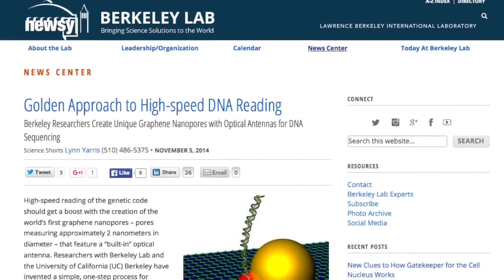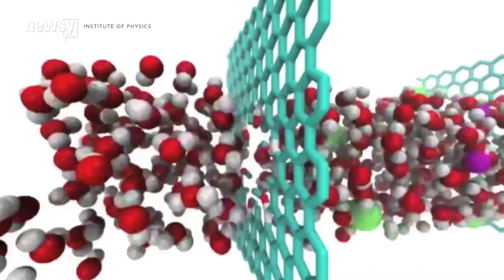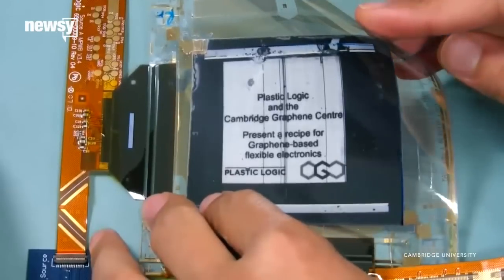There are reams of proof-of-concept studies that show the single layers of carbon atoms could be useful for everything from DNA sequencing to water filtration to high-efficiency energy storage. So why is it still wiggling around under lab lights instead of working its way into every consumer product imaginable?